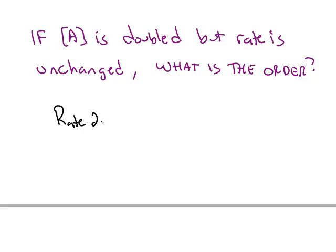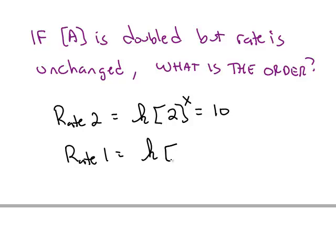So we're going to set up a ratio again. We're going to double the amount of A. Let's say we started at 1 mole per liter. So the first time we did it with a molarity of 1, the second time we did it with a molarity of 2, but in both cases we get exactly the same rate.